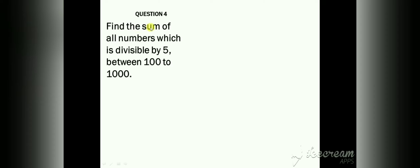...of all numbers which are divisible by five between 100 to 1000. So we have to find out the sum of all numbers divisible by five between 100 and 1000. The first number will be 105, because they are asking for numbers divisible by five in between 100 and 1000, so the first number becomes 105.